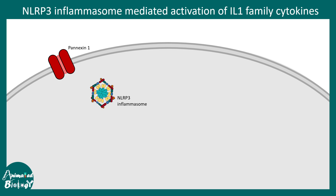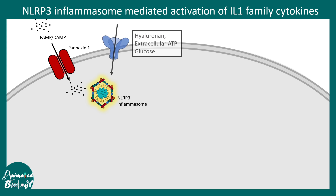How is the NLRP inflammasome activated? What are the trigger signals? The trigger signals can be internal or external. There are channels like pannexin which transport PAMPs or DAMPs — pathogen-associated molecular patterns or damage-associated molecular patterns — leading to activation of the NLRP inflammasome. Cellular signatures of damage such as extracellular ATP, glucose, and hyaluronan are all potential triggers for NLRP3 inflammasome activation. Increased ROS levels can also activate the inflammasome.